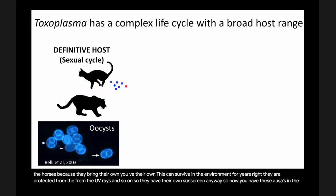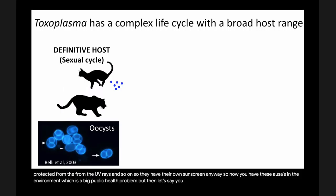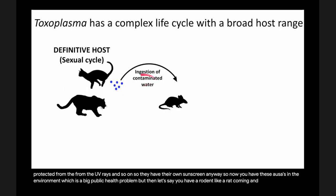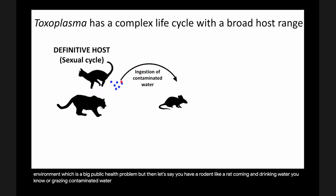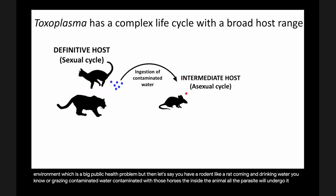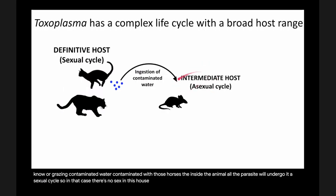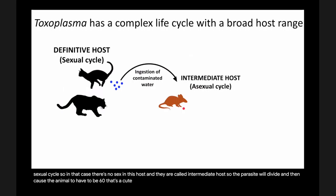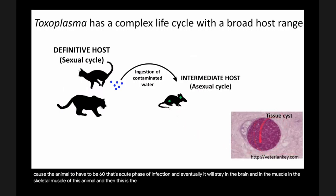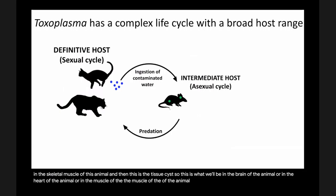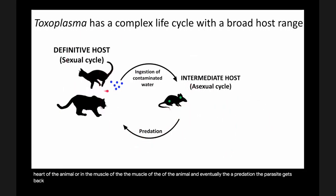These oocysts can survive in the environment for years — they have their own UV protection, like sunscreen. You can visualize them with UV light. If a rodent comes and drinks contaminated water, inside the animal the parasite undergoes its asexual cycle — there's no sex in these intermediate hosts. The parasite divides, causing acute infection, and eventually stays in the brain and skeletal muscle as tissue cysts. Via predation, the parasite gets back into its definitive host.